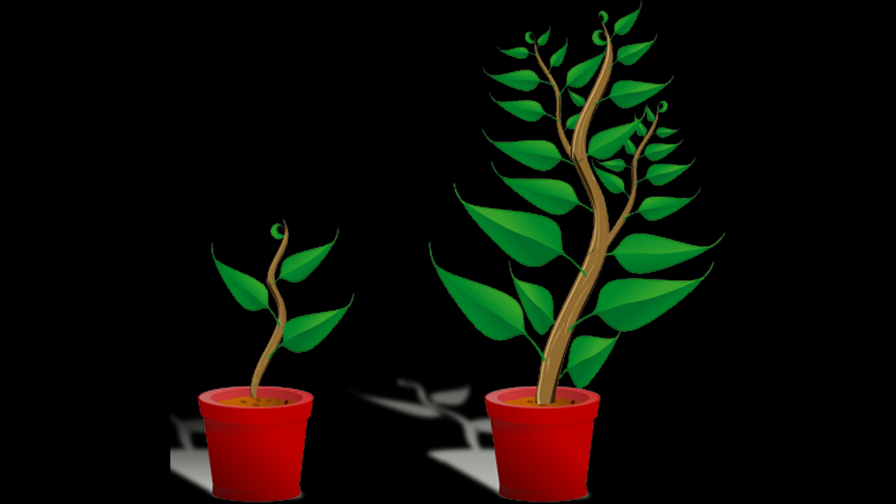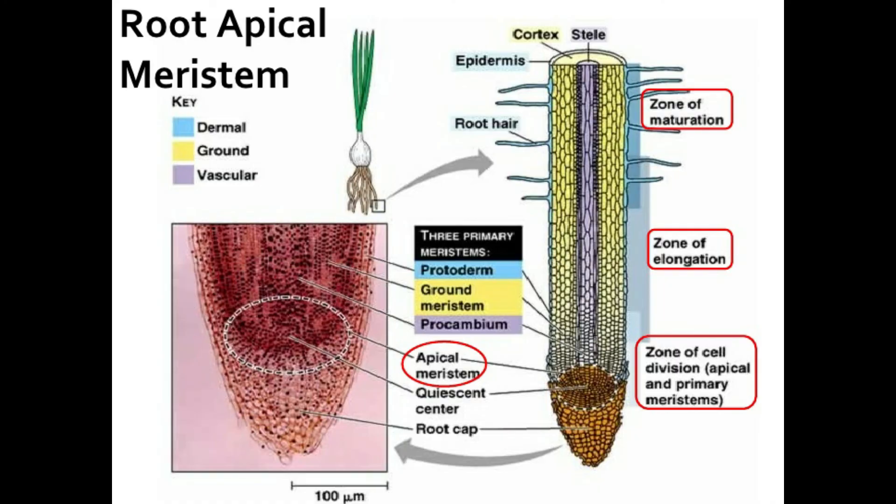Apical meristems are found at the tips of roots and shoots, and are primarily concerned with the perpetual growth zone found at the apices of the roots and stems. These are responsible for the increase in number of cells at the tip of root and stem, so they play an important role in primary growth.